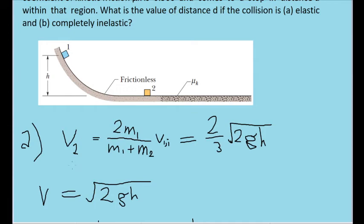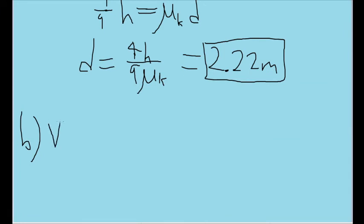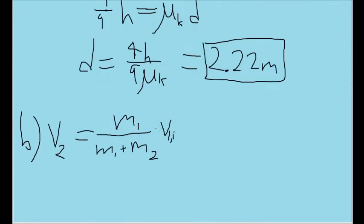Likewise, there is a similar formula for completely inelastic collisions, where the final velocity of the block, and I say singular block because they're both basically together now, is equal to M1, the mass of block 1, divided by the sum of both masses, multiplied by the initial speed of block 1. So basically the same formula we had above except without this 2 in the numerator.